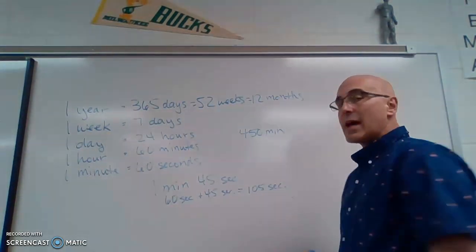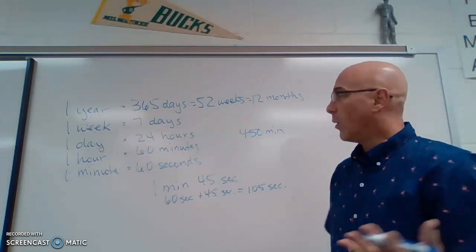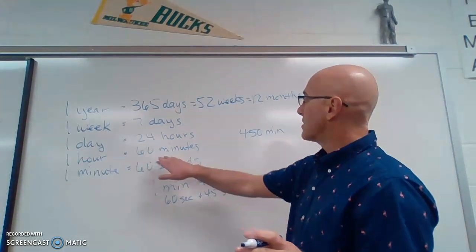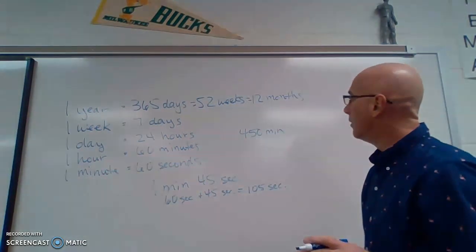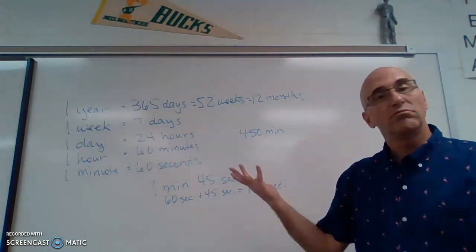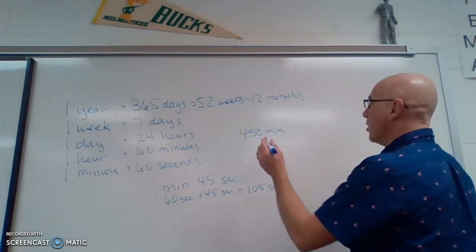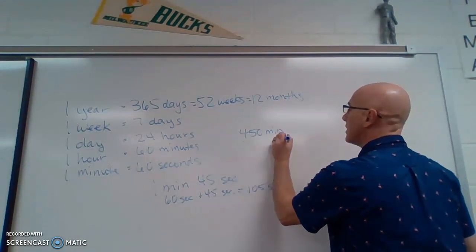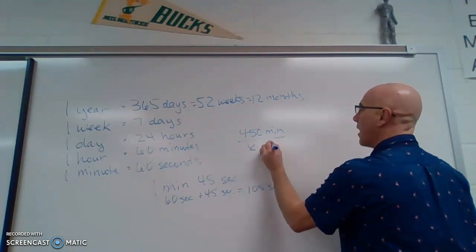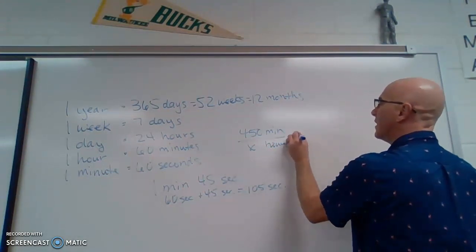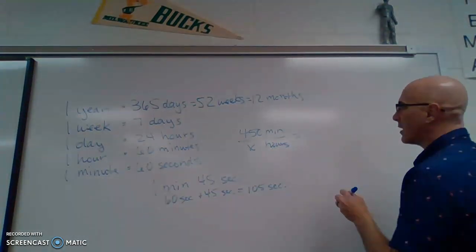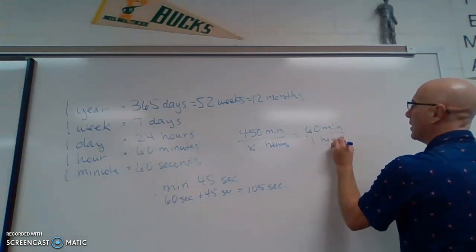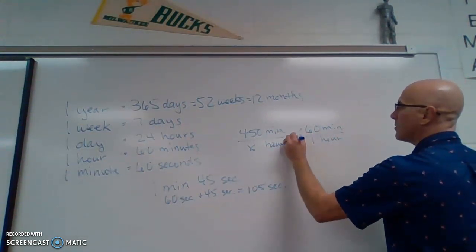So we could set up a proportion if we want. You might be able to figure this out just by dividing. You know that there's 60 minutes in an hour. I'm just going to divide that. You probably could. Or we could set up a proportion. So 450 minutes is equal to x hours. I'm going to set up my proportion, another ratio. We know that there are 60 minutes in one hour.